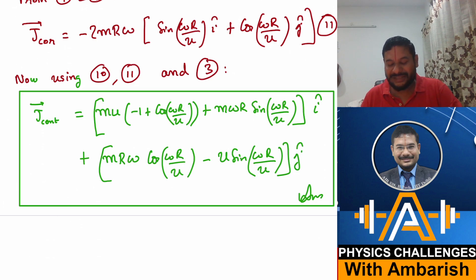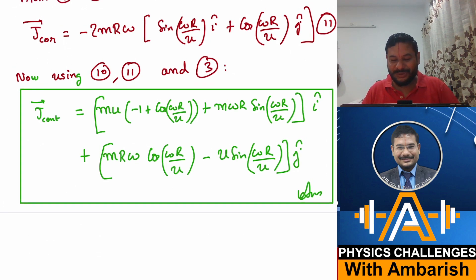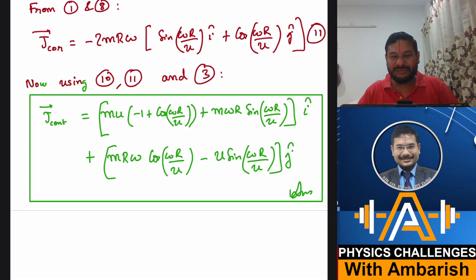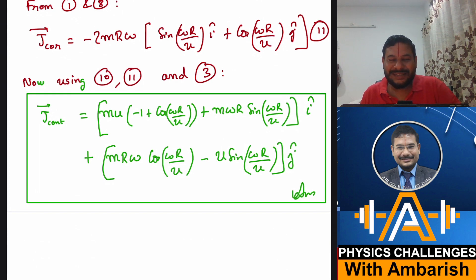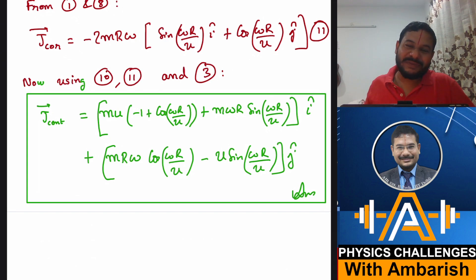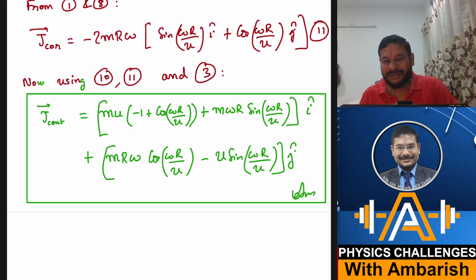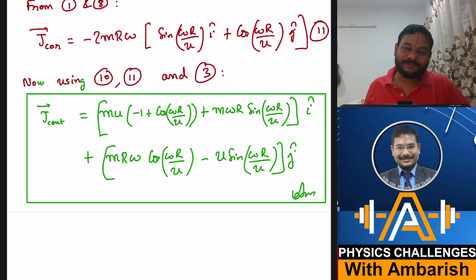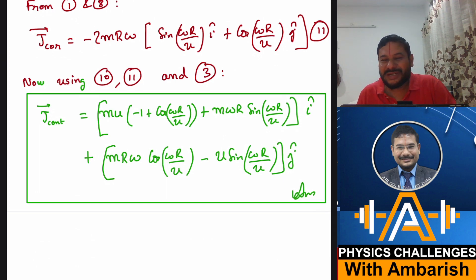Another interesting extension is finding the work done by the centrifugal force. The Coriolis force does zero work because it is always perpendicular to the velocity (power = 0). Therefore, all the change in kinetic energy from the rotating frame equals the work done by the centrifugal force alone. One could also ask for the angular impulse of the Coriolis force.